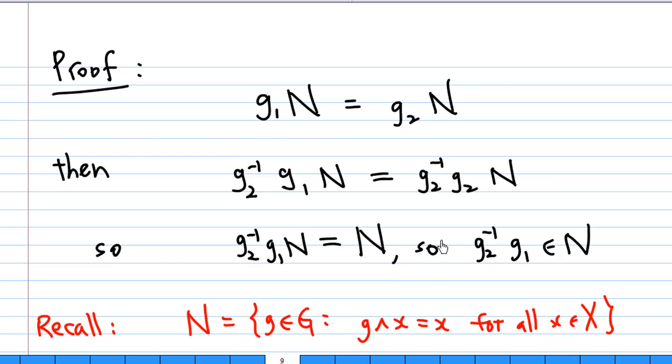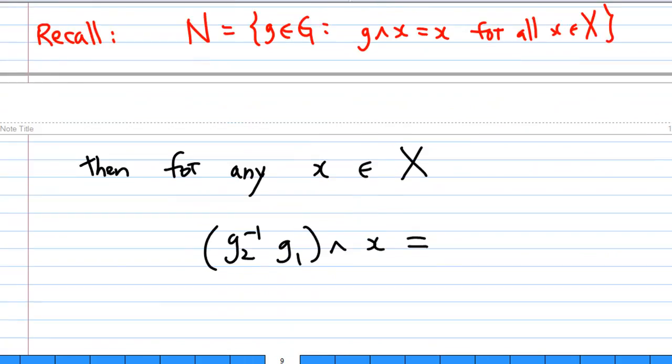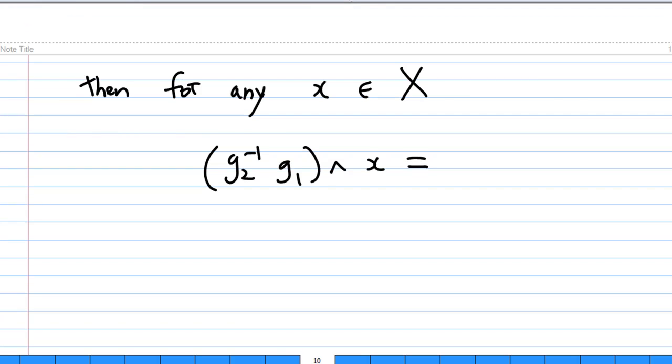Now, recall what is N. N consists of all the elements in G such that g^x equals x for all x inside the set. So, now because g2^{-1}g1 is inside N, it will leave every element in X fixed. So, g2^{-1}g1^x will be x again.